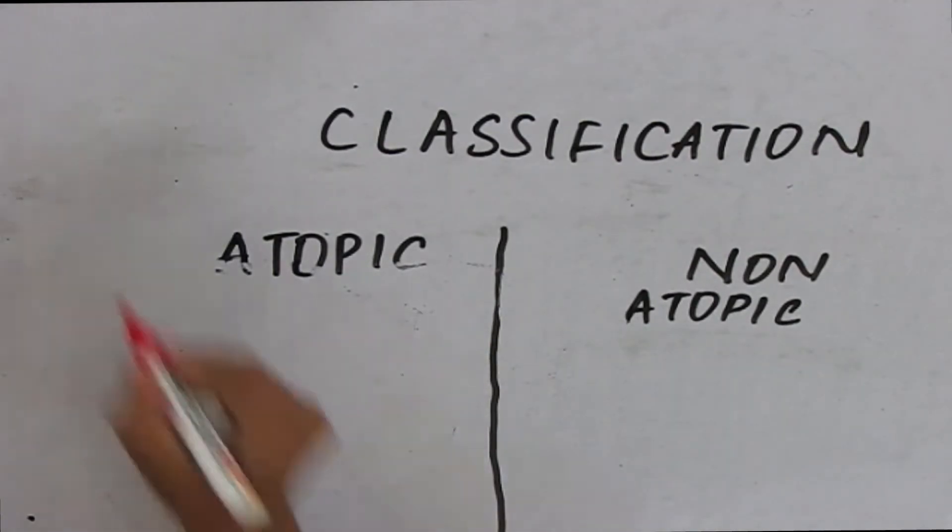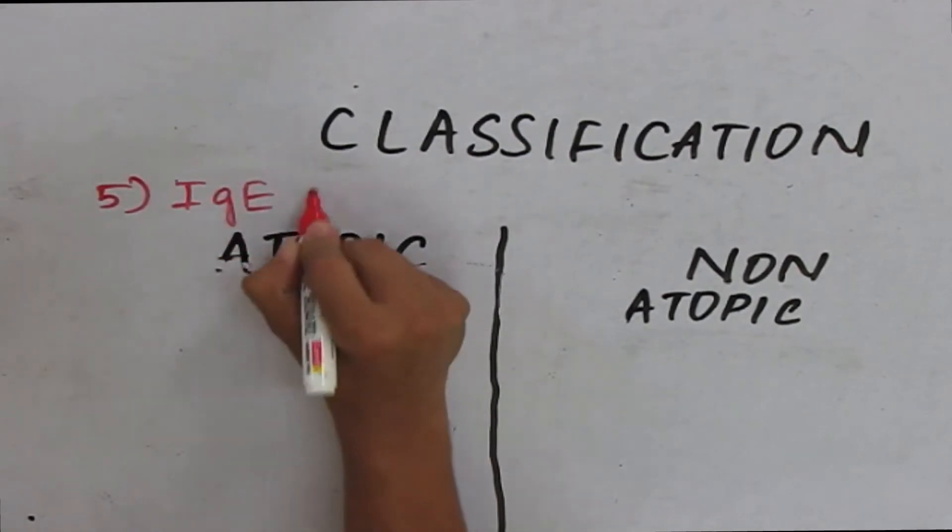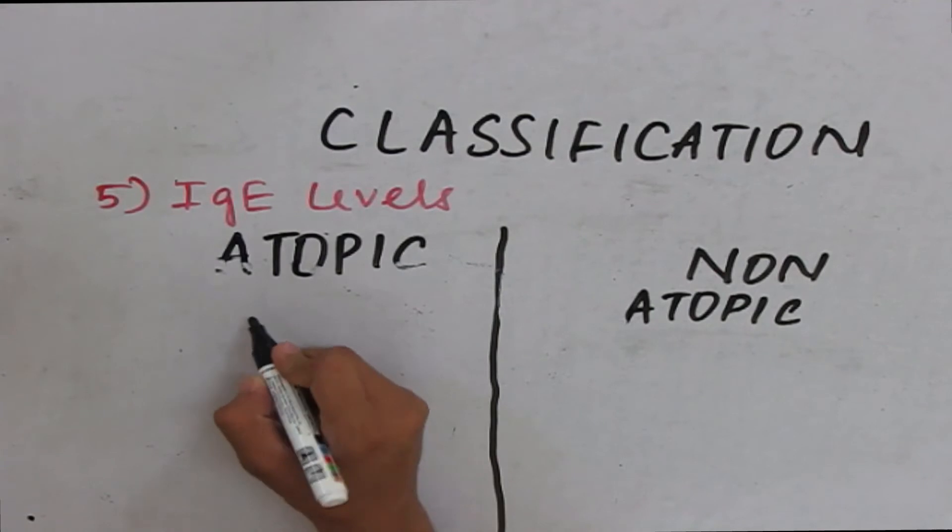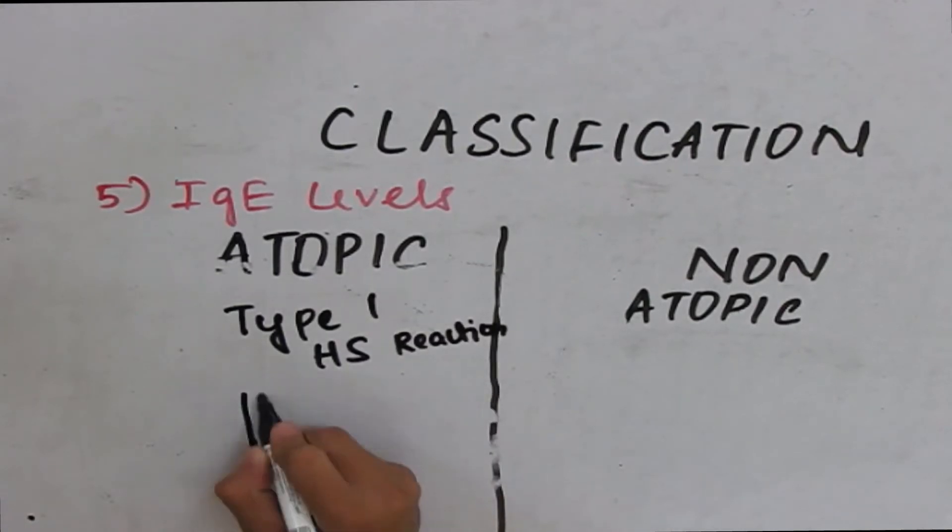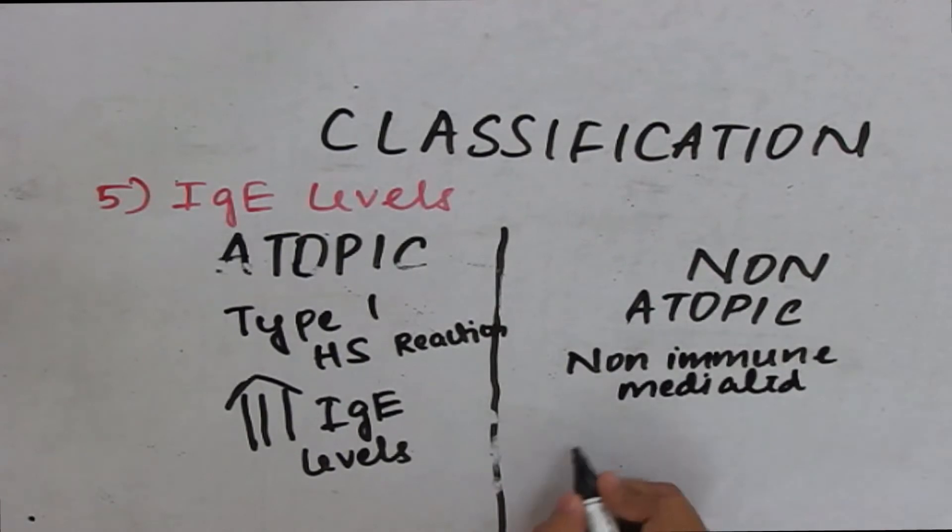The next distinguishing factor is IgE levels, that is immunoglobulin E levels. As I told you before, atopic type is a type 1 hypersensitivity reaction. So, there is an obvious increase in the IgE levels. Whereas, the non-atopic type is non-immune mediated. Hence, the IgE levels are normal.